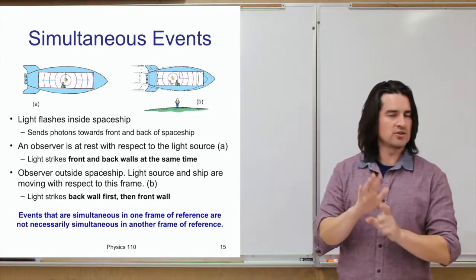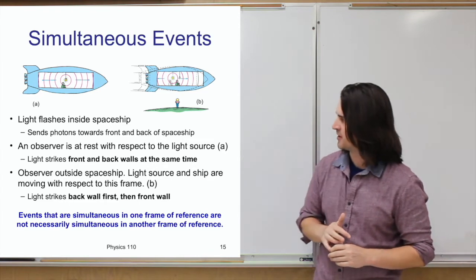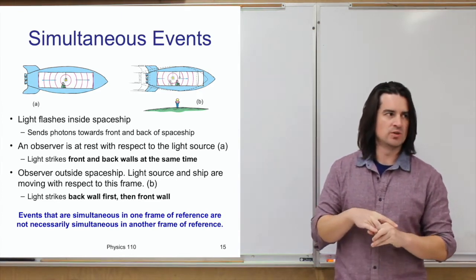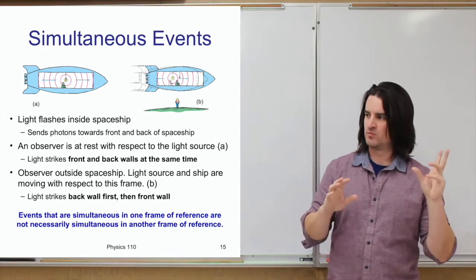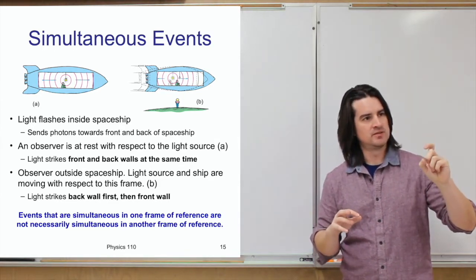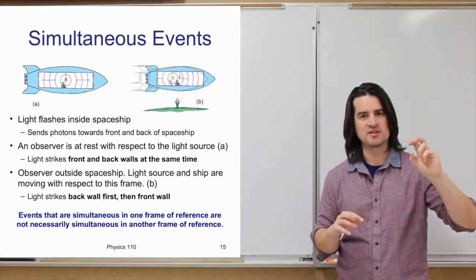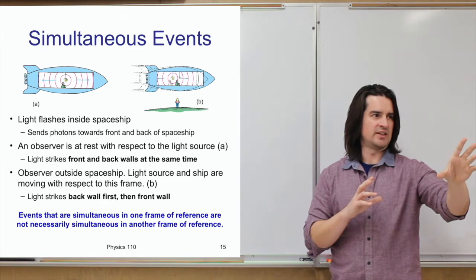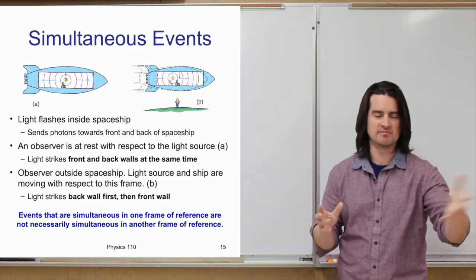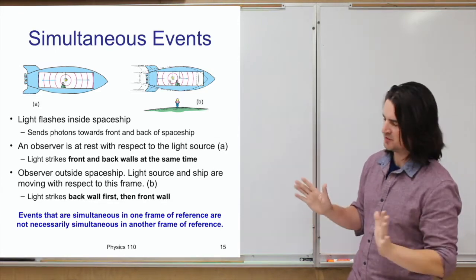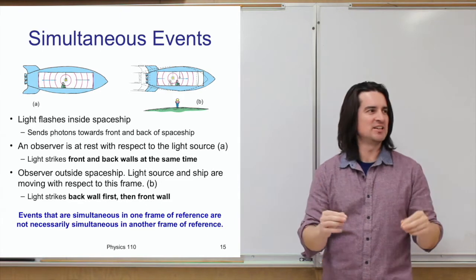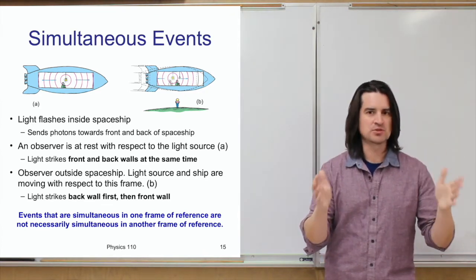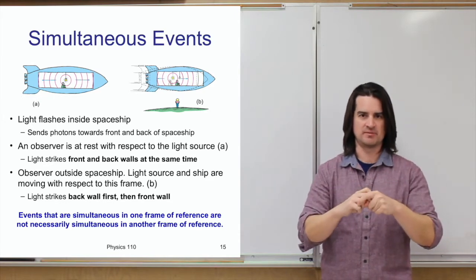Another consequence of light moving at the same speed regardless of reference frame is what we call simultaneity. In everyday life, you think that if two people each see something happen, it happened at the same time. But there's no absolute sense that events happening simultaneously in one person's reference frame also happen simultaneously in another person's reference frame.